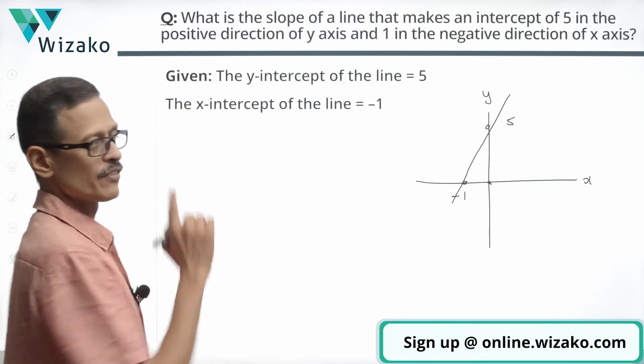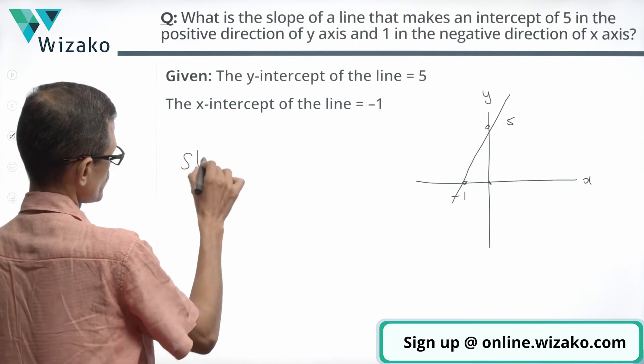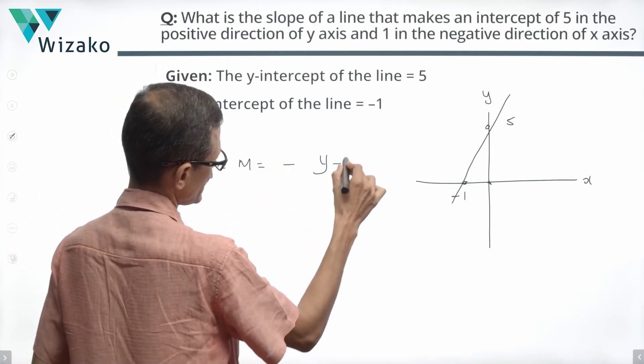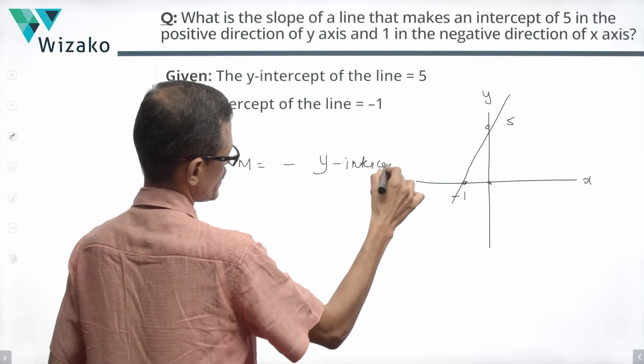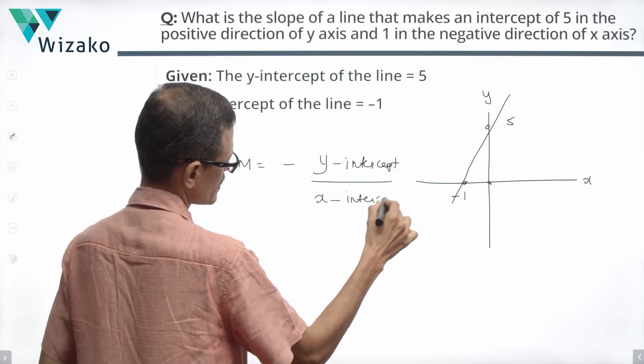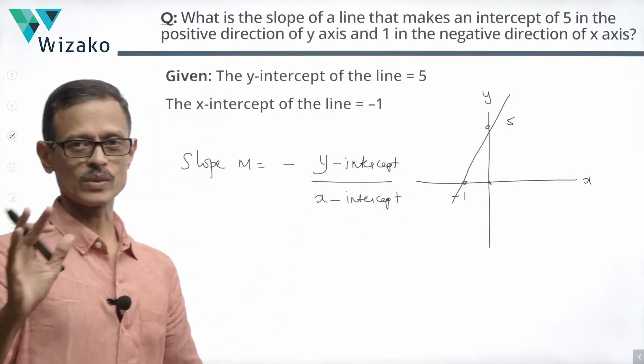Slope of a line, if its intercepts are known, is computed as follows. The slope m is equal to negative of y-intercept divided by the x-intercept, right? Y-intercept by x-intercept multiplied by minus 1. That should give us the answer.